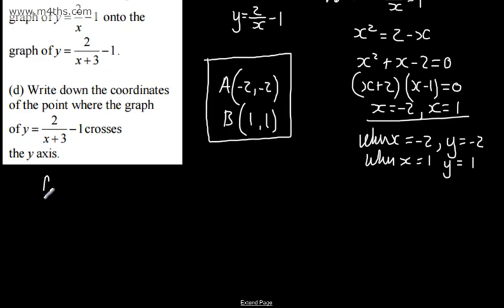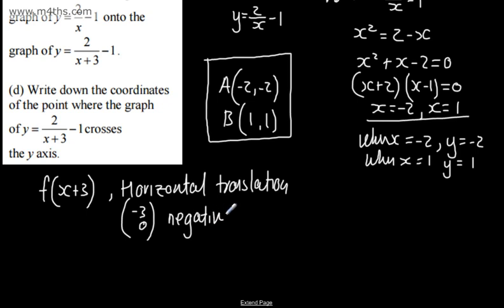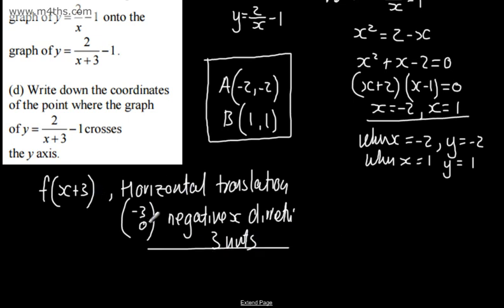What we can say is this is f(x + 3). So this is a horizontal translation in the negative x direction. The vector is (-3, 0), or we can say it's a translation of 3 units in the negative x direction. Anything along those lines is perfectly fine — it's a (-3, 0) translation, moving to the left.